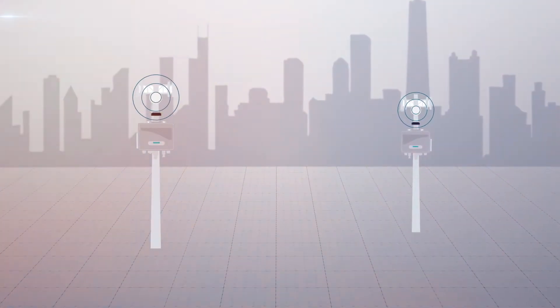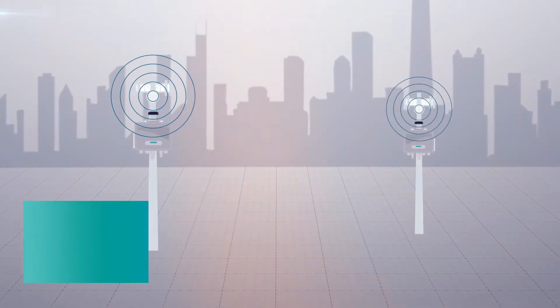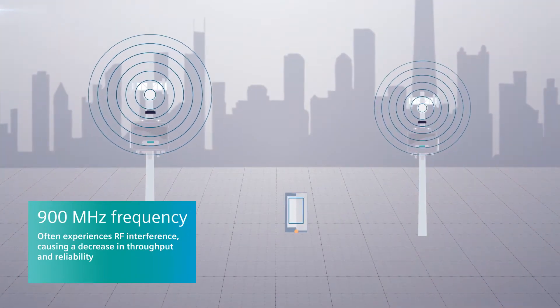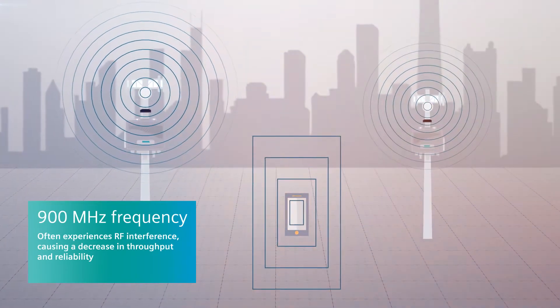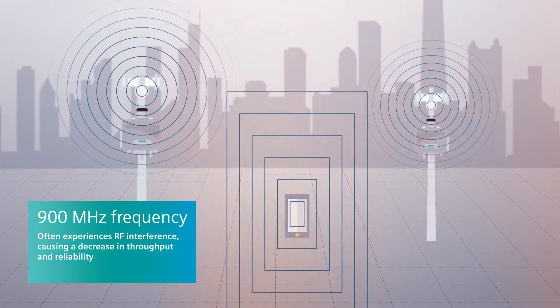In the past, many radio systems operated on the 900 MHz frequency, which often experienced RF interference, causing a decrease in throughput and reliability.